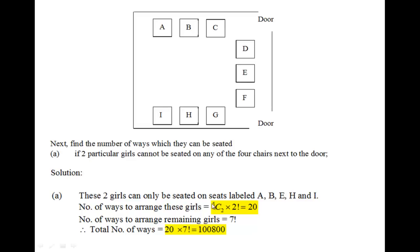So the number of ways to arrange these two girls would be five seats, choose two of the seats, and then we can permute the position of these two girls, hence the two factorial, which gives us 20 when we multiply the two values together.